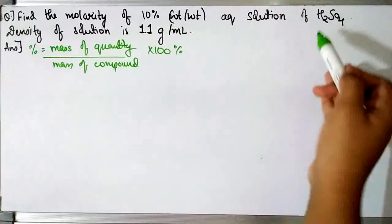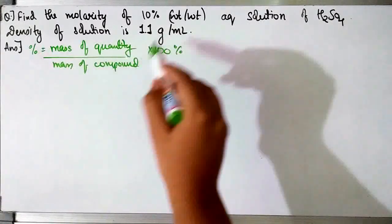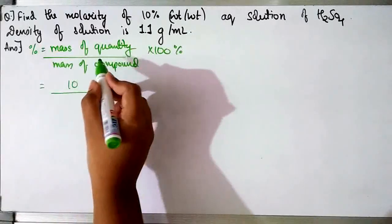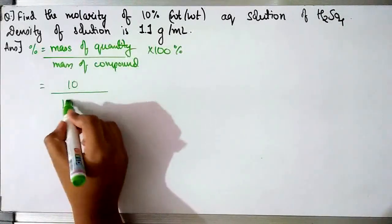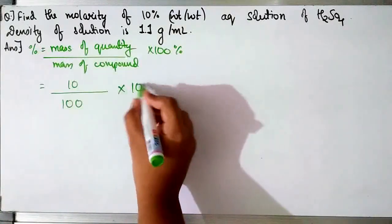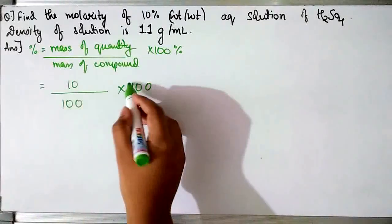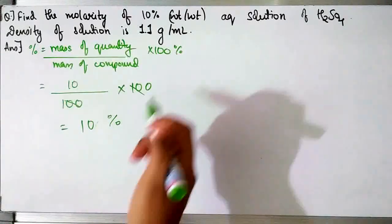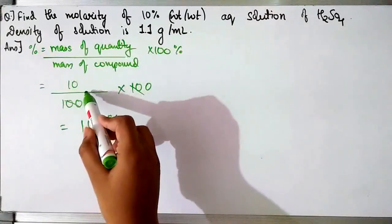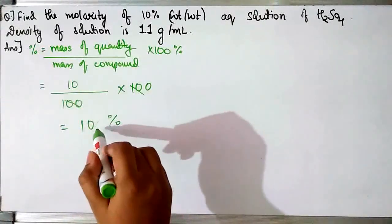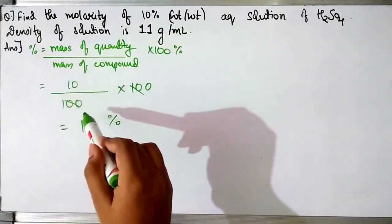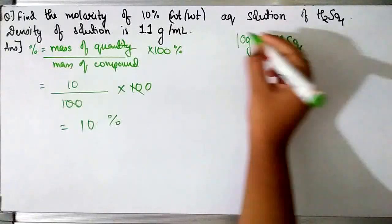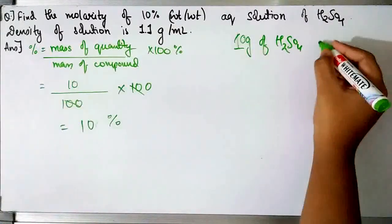That gives us the 10% weight-by-weight solution of H₂SO₄. You get 10% only when the mass of H₂SO₄ is 10 grams and the mass of the solution is 100 grams, into 100%. The 100s cancel and you get 10%. So this means that 10 grams of H₂SO₄ is present in 100 grams of solution.